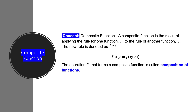Concept: composite function. A composite function is the result of applying the rule for one function f to the rule of another function g. The new rule is denoted as f small circle g. f∘g is equal to f of g of x. The operation circle that forms a composite function is called composition of functions.